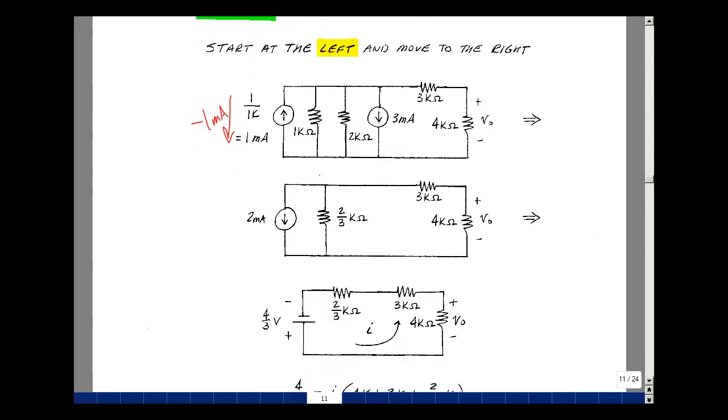Now I could do a source transformation with these two, converting them into a voltage source and a series resistance. Take the product of these two. The k and the milli cancel, so I get 4 divided by 3 volts. The arrowhead's pointing down, so the plus sign will be over here. And then we'll have a series resistor of 2/3 k.